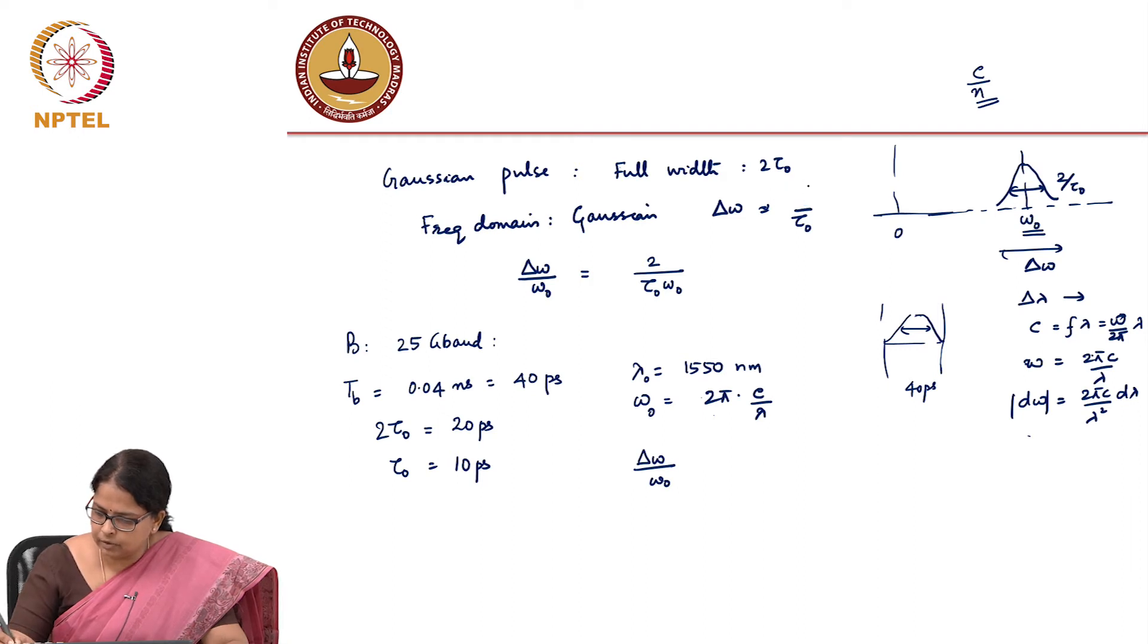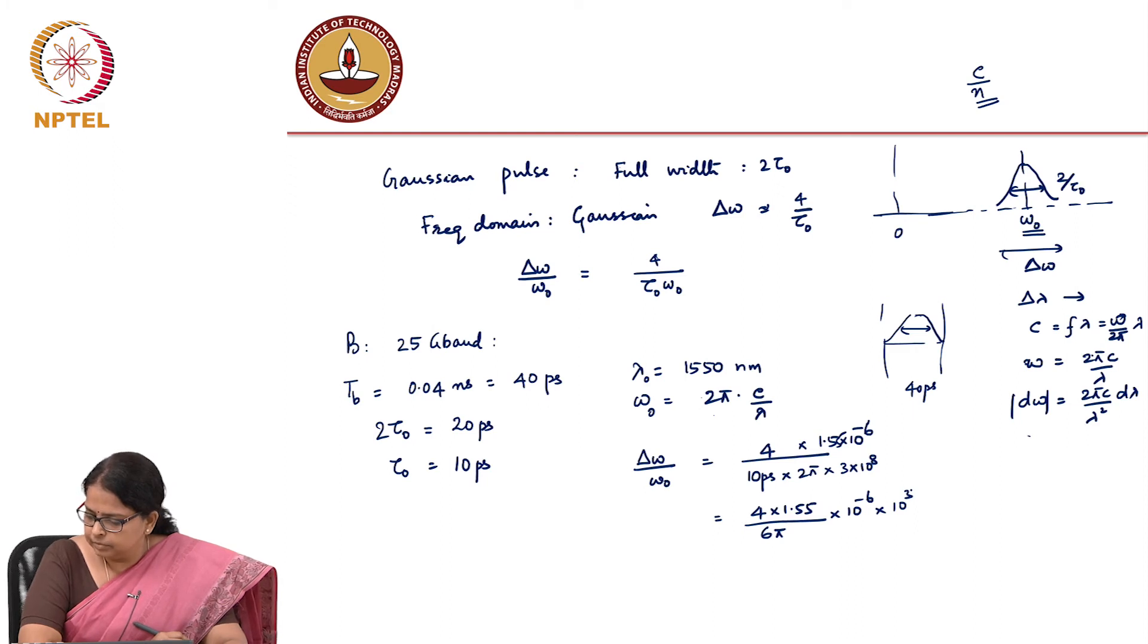So, if delta omega is, this is 4, this becomes 4. So, this becomes 4 divided by 10 picoseconds multiplied by 2 pi into 3 into 10 power 8 into 1.55 into 10 power minus 6. So, this becomes 0.3, which is 0.6 into 10 power minus 4 roughly.